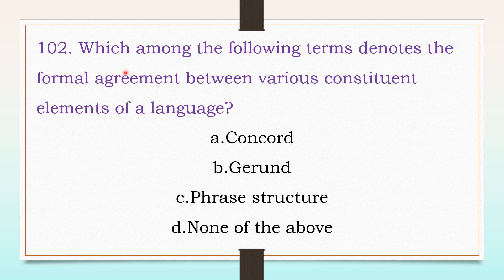Which among the following terms denotes the formal agreement between various constituent elements of a language? Options: concord, gerund, phrase structure, or none of the above. The answer is A, concord.